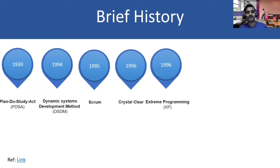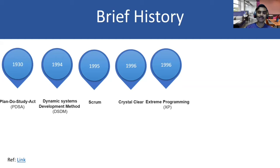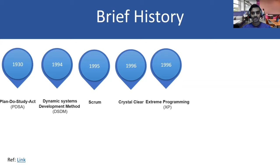Moving on to Extreme Programming — necessity is the mother of invention. Chrysler was trying to roll out their payroll project, a legacy-to-new transformation. They tried waterfall, failed in seven months. They brought in Kent Beck as a consultant. In his own words, he spent two to three weeks in a meeting room with markers and a few smart minds, grouping all the best practices that existed — things like pair programming and test-driven development. He carved out a methodology and was able to deliver the first launch for Chrysler supporting 10,000 employees. The project, famously called C3, was scrapped years later — not because it couldn't deliver, but purely because the vendor changed.